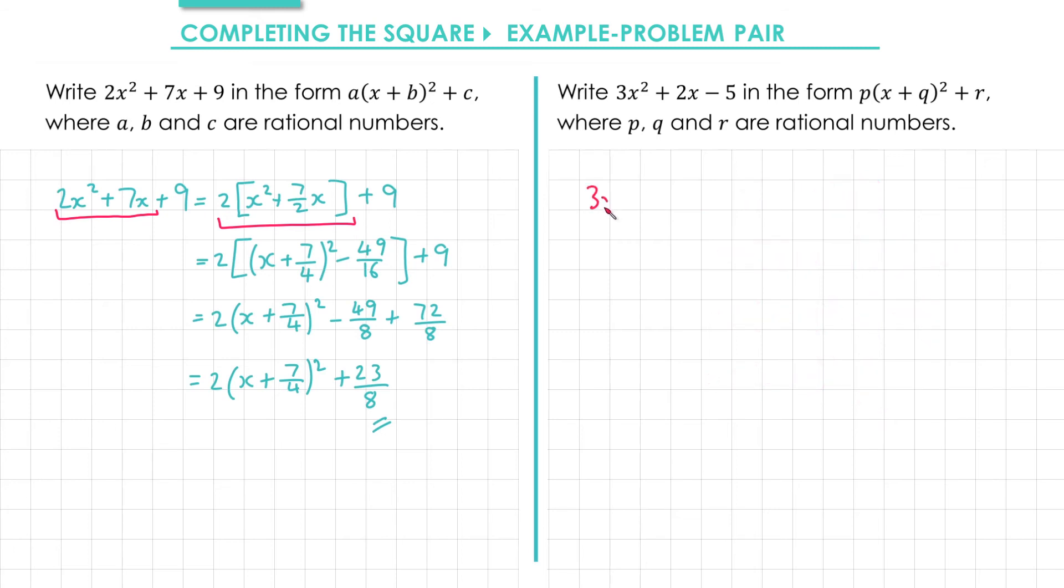So this time we have 3x squared plus 2x minus 5. The first step is to pull the 3 outside of the brackets. So we'll have 3 with some square brackets. Inside we need x squared. Dividing the 2 by 3 gives us 2 third x. And then we leave the 5 on its own.